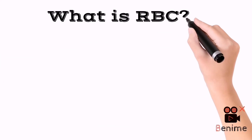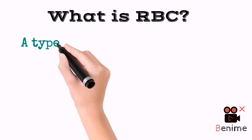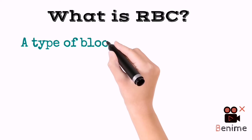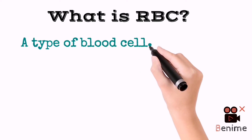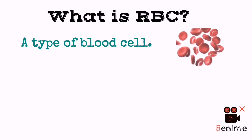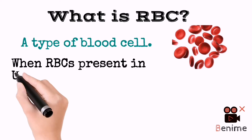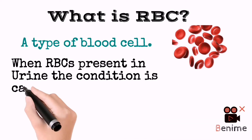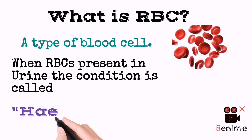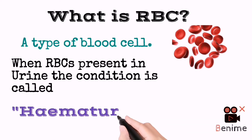First, what are red blood cells? Red blood cells are the type of blood cells which help in oxygen and carbon dioxide transportation. If RBCs are present in urine, the condition is called hematuria.